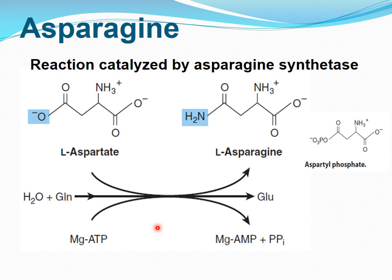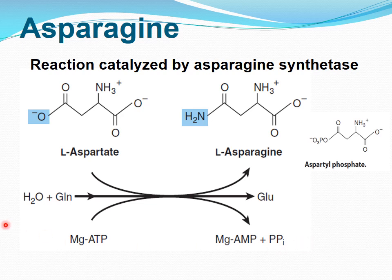This reaction involves the intermediate formation of aspartyl phosphate. The coupled hydrolysis of inorganic pyrophosphate to inorganic phosphate by pyrophosphatase ensures that the reaction is strongly favored.